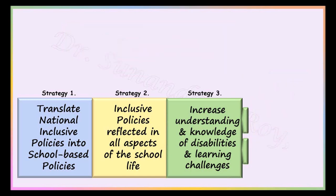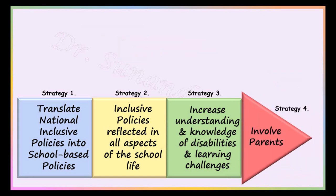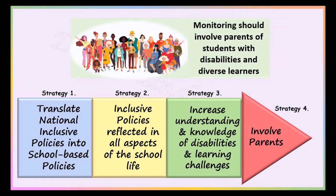The fourth strategy deals with involving parents in monitoring the differently abled students in order that the systems are transparent and accountable to them and the children. The parents of the regular children are also involved to help parents of the differently abled students. For example, parents volunteer to form carpools helping students with physical challenges in transportation. Thus, parents are very actively involved in schools having an inclusive culture.